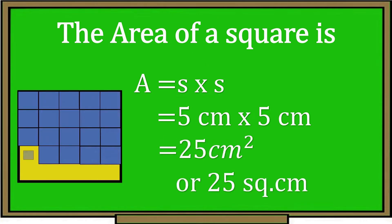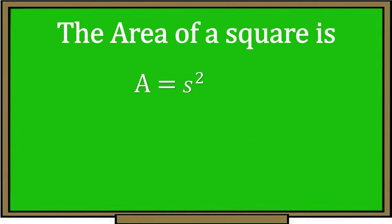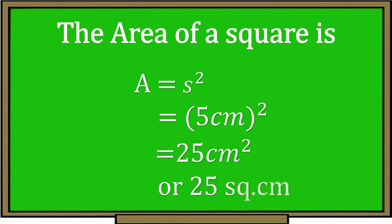We can also use the other formula for finding the area of a square: area equals S squared. The measurement of the side of the square is 5 centimeters, so 5 centimeters squared equals 25 square centimeters. These are the two formulas we can use in finding the area of a square.